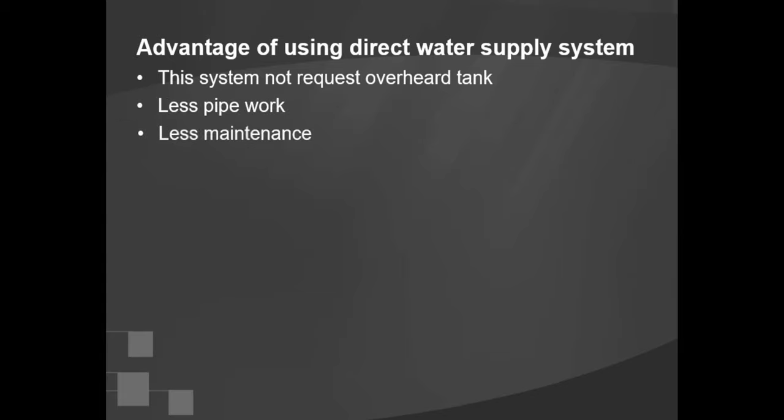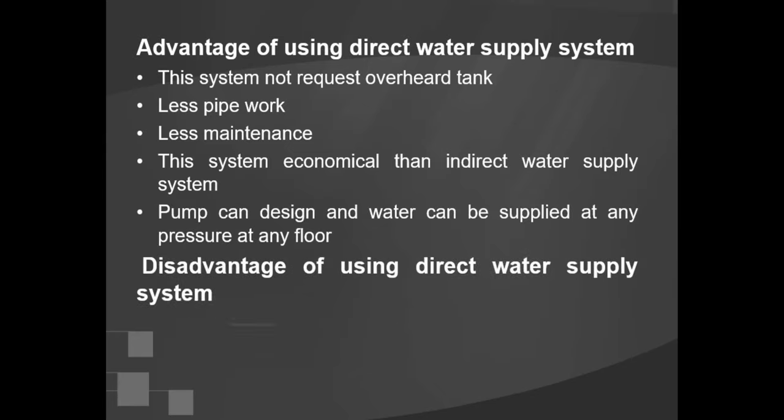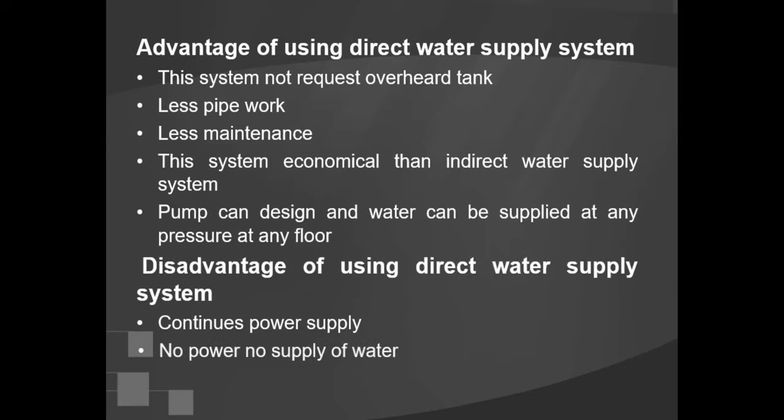Advantages of using the direct water supply system: this system does not require an overhead tank, involves less pipe work, requires less maintenance, and is more economical than the indirect water supply system. Water can be supplied at any pressure to any floor. Disadvantage: this system requires a continuous power supply — when there is no electricity, water cannot be supplied.